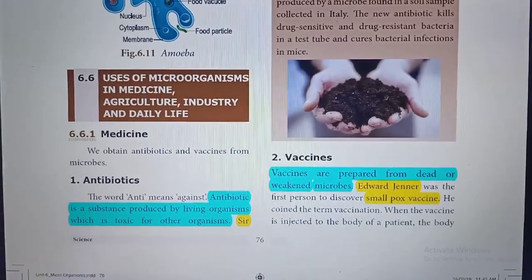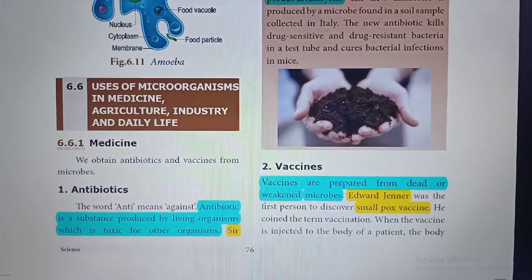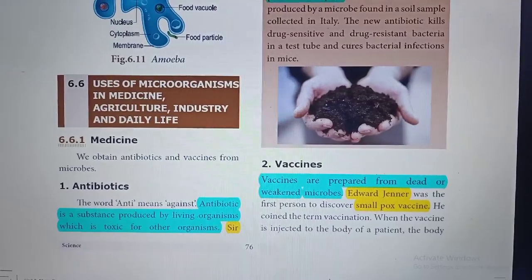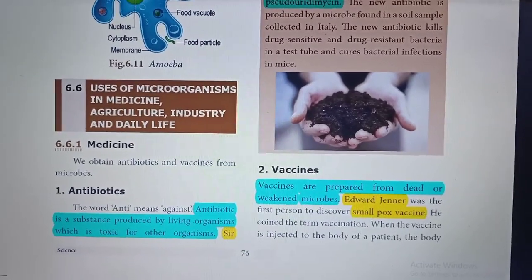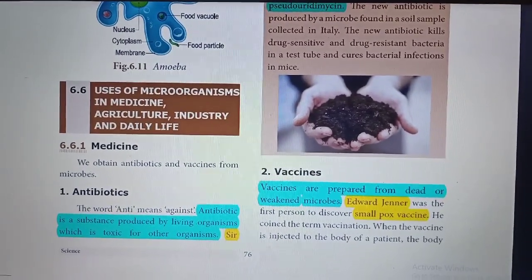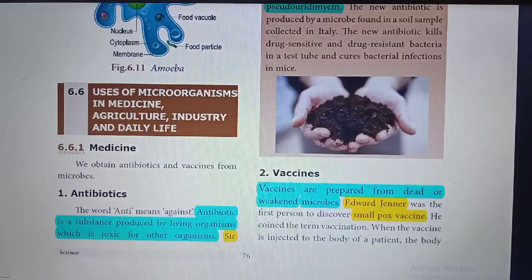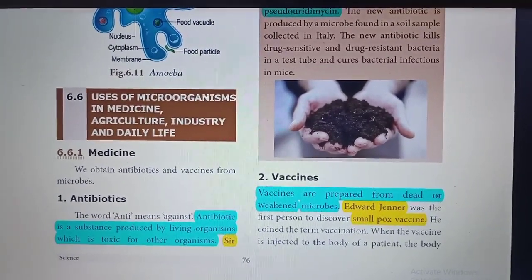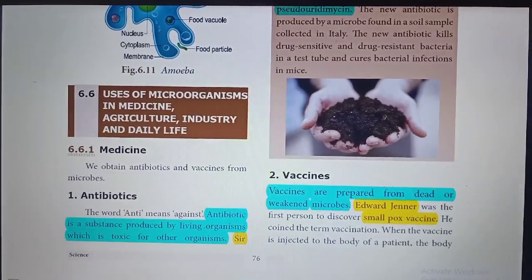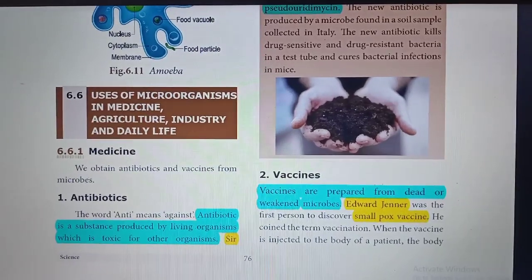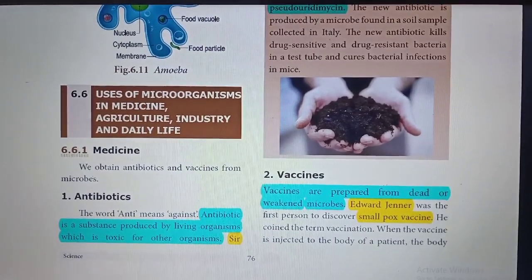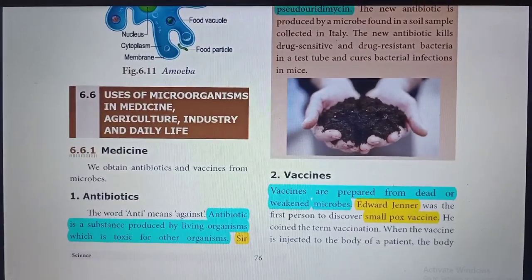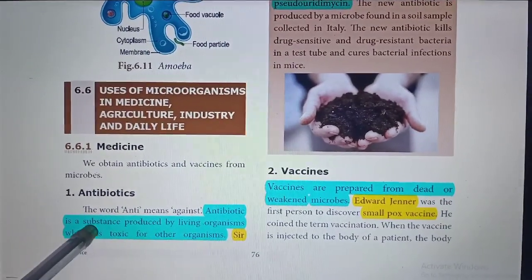Hi students, this is your science teacher. In this session we are going to continue with Unit 6: Microorganisms. In the last video we saw the structure of the different microorganisms. Now in this session we are going to continue with uses and harmful effects of microorganisms. We are going to start with antibiotics. What are antibiotics? An antibiotic is a substance produced by living organisms which is toxic for other organisms.